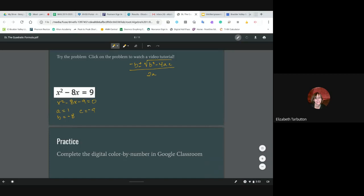So then we can plug those into our equation. We get negative negative 8 is positive 8, plus or minus the square root of negative 8 squared minus 4 times a, which is 1, times c, which is negative 9, all over 2a, where a is 1.